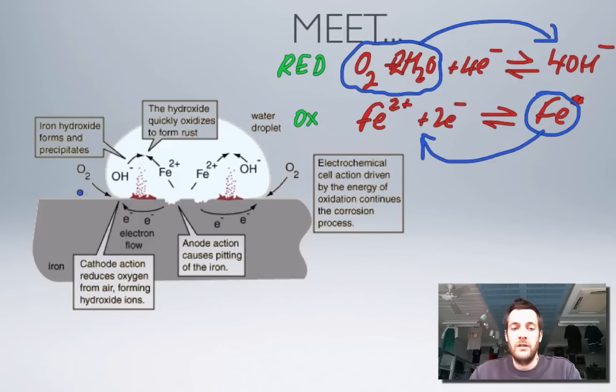Here's our cathode. The cathode action reduces oxygen, it takes oxygen, adds electrons, and turns it into hydroxide ions. Now we've made iron ions here and hydroxide ions there, they can diffuse through the water droplet, so the water droplet's acting like our salt bridge. This diffusion of these ions allows the completion of this circuit.